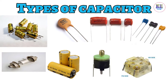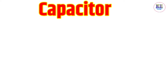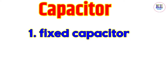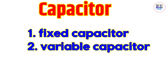Welcome to Electrical and Electronics Knowledge. In this video, you will learn the types of capacitors. Capacitors are mainly divided into two types: number one, fixed capacitors, and number two, variable capacitors. Fixed capacitors are those with fixed capacitance values, and variable capacitors have variable or adjustable capacitance values.